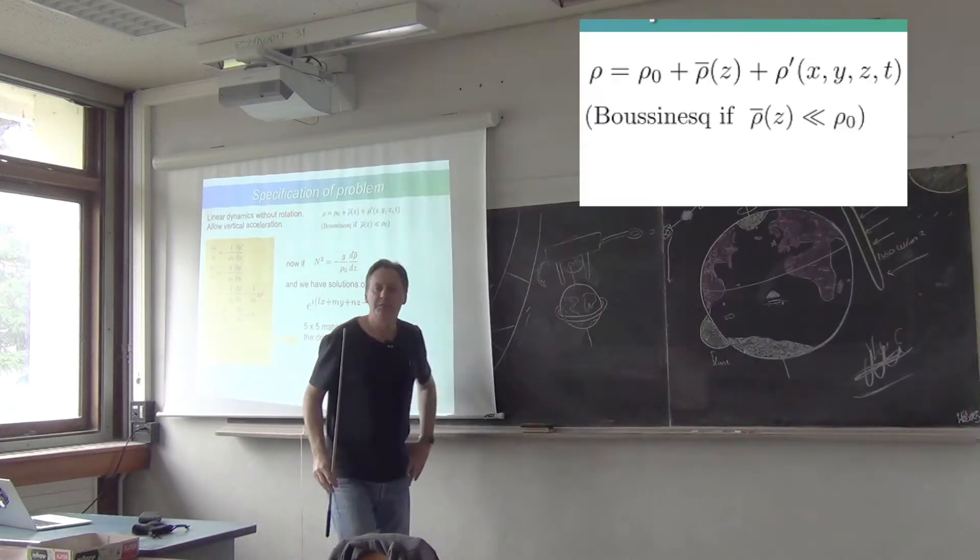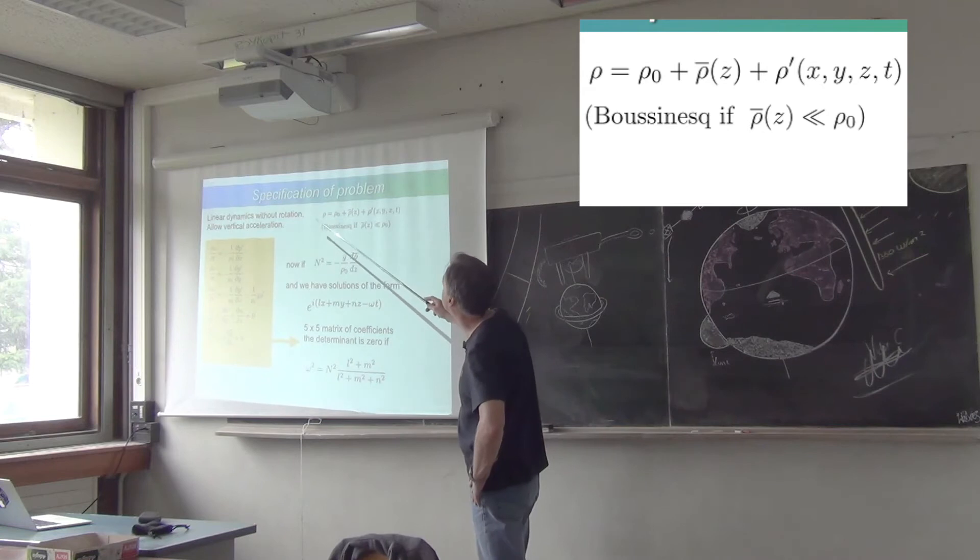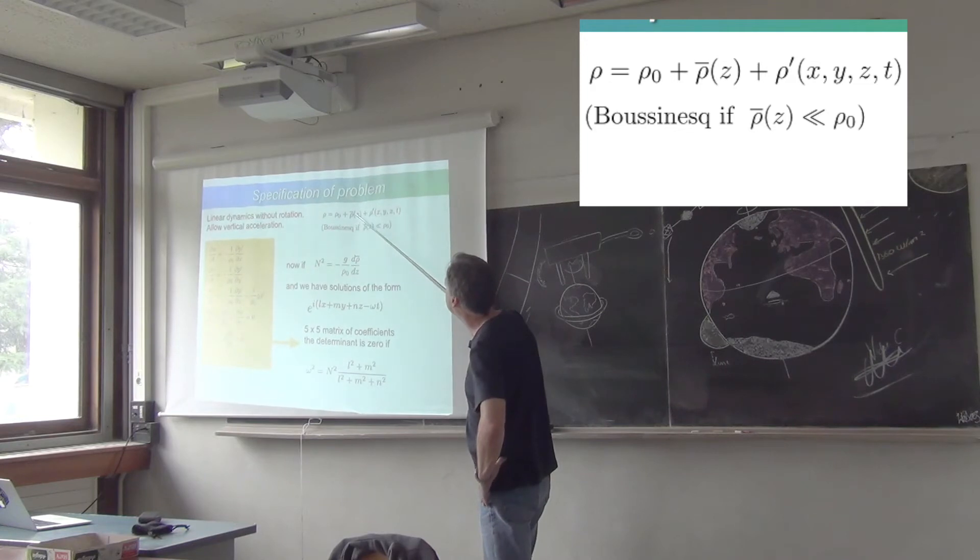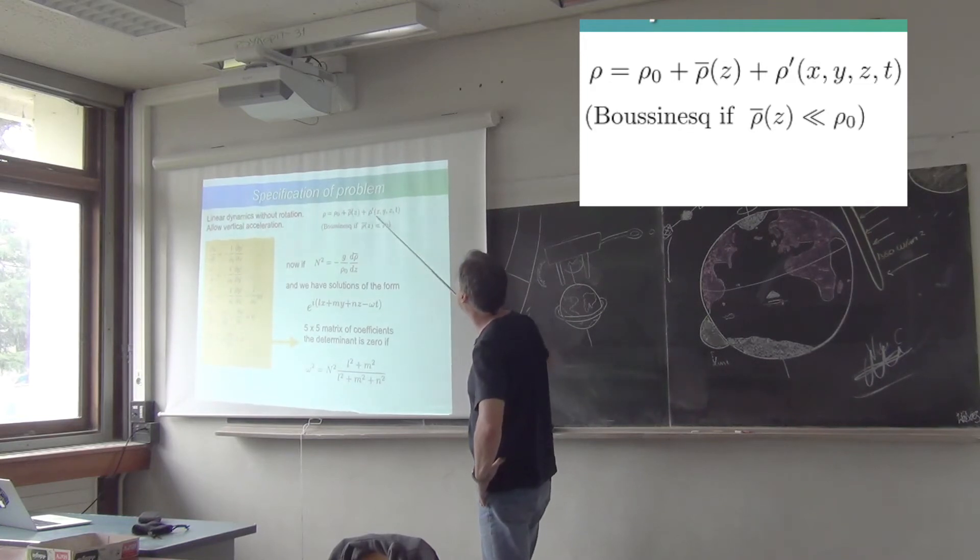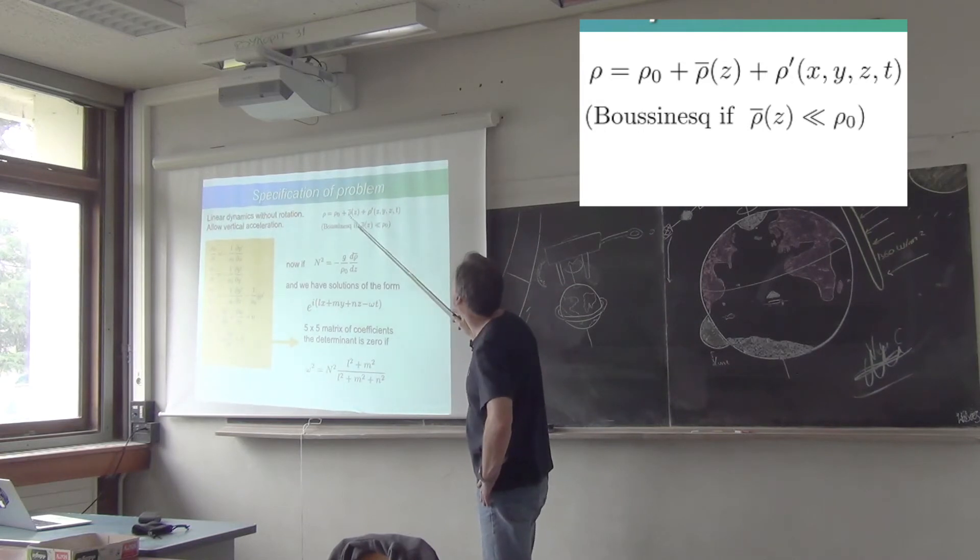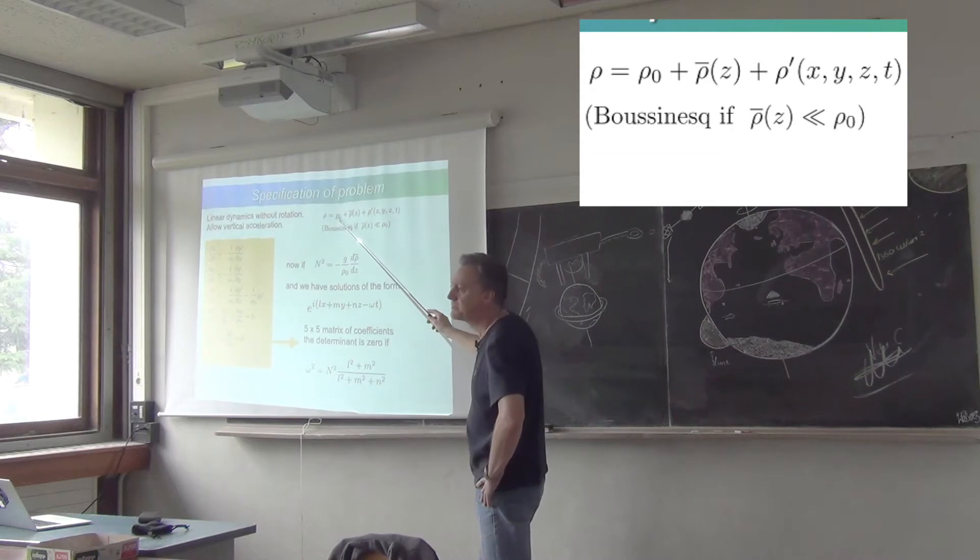There are various ways to specify the density of the fluid, but basically what we want to do is to say that the fluid has a certain density which is a basic density plus a density which is a function of z plus some small perturbation to do with the wave movement. This basic stratification is what's important in this problem. If this basic stratification is very small compared to the actual density of the fluid, then that's called a Boussinesq fluid.